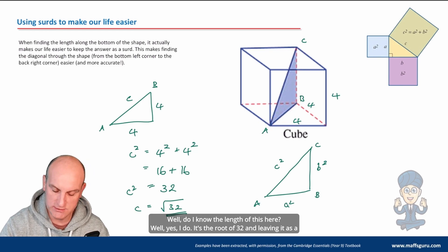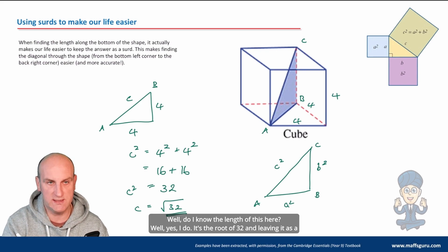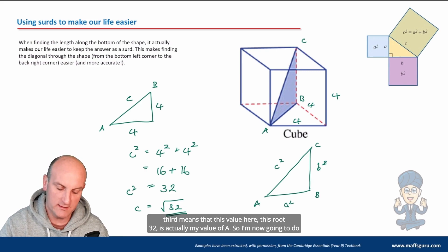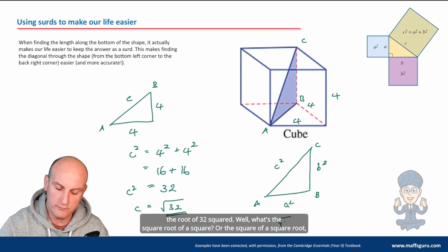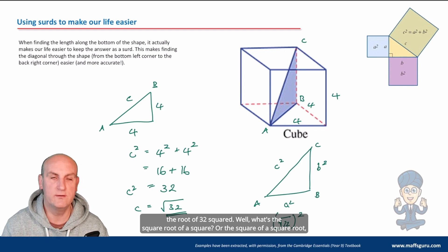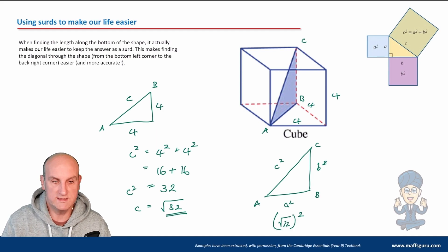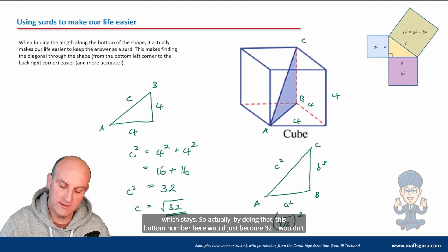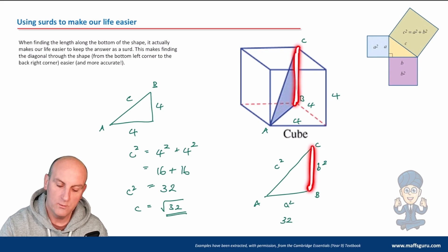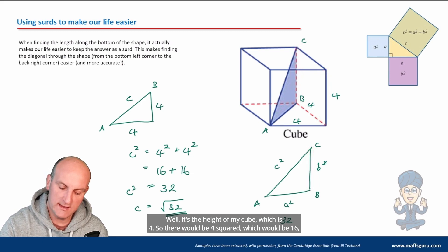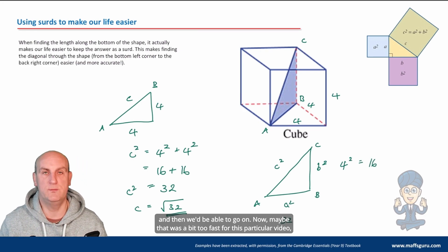Well do I know the length of this here? Well yes I do it's the root of 32 and leaving it as a surd means that this value here this root 32 is actually my value of a. So I'm now going to do the root of 32 squared. Well what's the square root of a square or the square of a square root which cancels. So actually by doing that this bottom number here would just become 32 I wouldn't have to worry about crazy values. And what's my value of BC? Well it's the height of my cube which is four so there would be four squared which would be 16 and then we'd be able to go on.